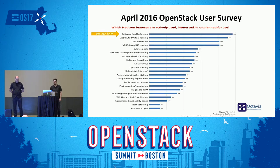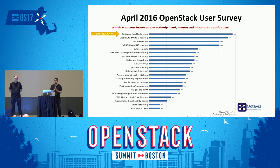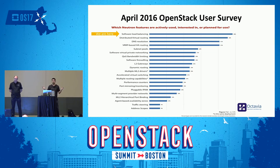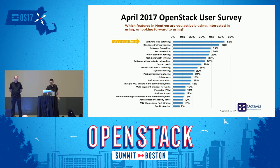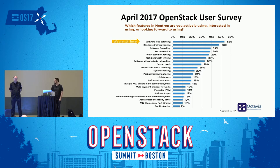The 2016 OpenStack user survey was exciting for us. We were the most requested networking feature at 48%, so thanks for filling that out. Definitely fill out the user survey — it's really helpful information for us to know how to prioritize things. You guys asked overwhelmingly for software load balancing and we're going to try to deliver that. And in 2017 we were even more popular: over 50% of people who responded said we were their number one networking feature.